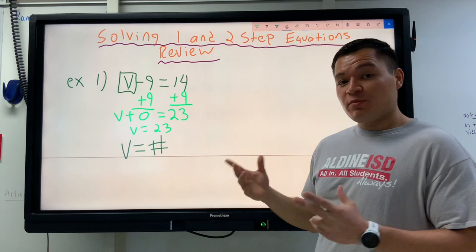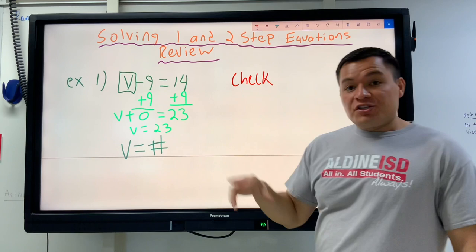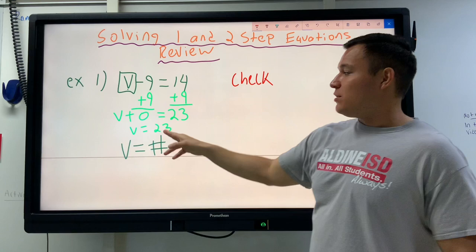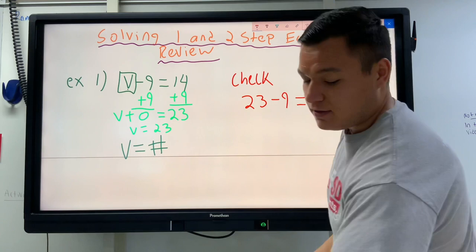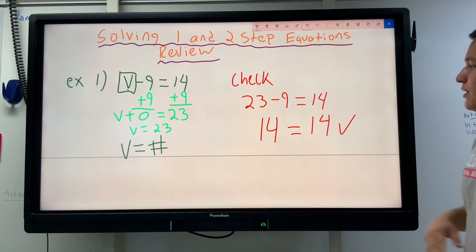We're pretty much done with this question. We have one more thing we need to do, and that's we're going to check our answer. When you check your answer, that means you're going to take this number 23, which is equal to V. We're going to check our answer by taking this number 23, and we're going to put it everywhere that we put a box at the start. 23 minus nine equals 14. If this thing subtracts to make 14, then we got this right. 23 minus nine makes 14, and 14 is equal to 14. So this is true. You can put a little check mark. Let's move on to another example.